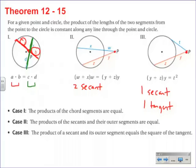For case 2, the products of the secants and their outer segments are equal. We need to be careful here. Here is our secant line. That has length W plus X.